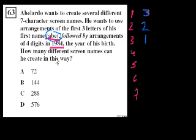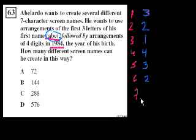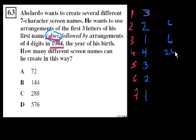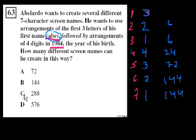When he gets to the fourth digit, he's starting to pick from 1984. For the fourth digit he has four options: the 1, the 9, the 8, or the 4. On the fifth digit he has three left, by the sixth digit two, and by the seventh he's forced to pick whatever's left — one digit left. So you multiply all of them: 3 times 2 is 6, times 1 is 6, times 4 is 24, times 3 is 72, times 2 is 144, times 1 is 144. So there are 144 different screen names he can create.